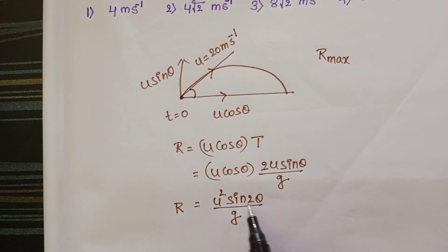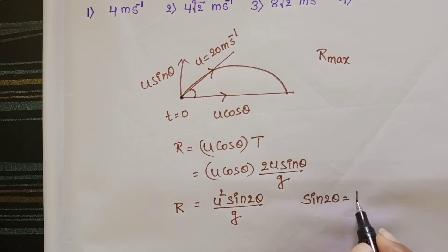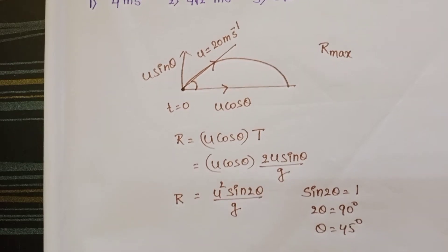So range is maximum when sin 2 theta is equals to 1 then only range is maximum. So from this 2 theta is equals to 90 degrees and theta is equals to 45 degrees.